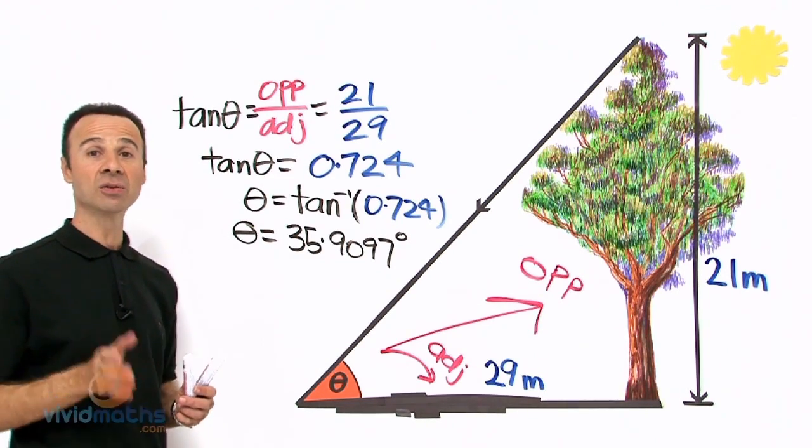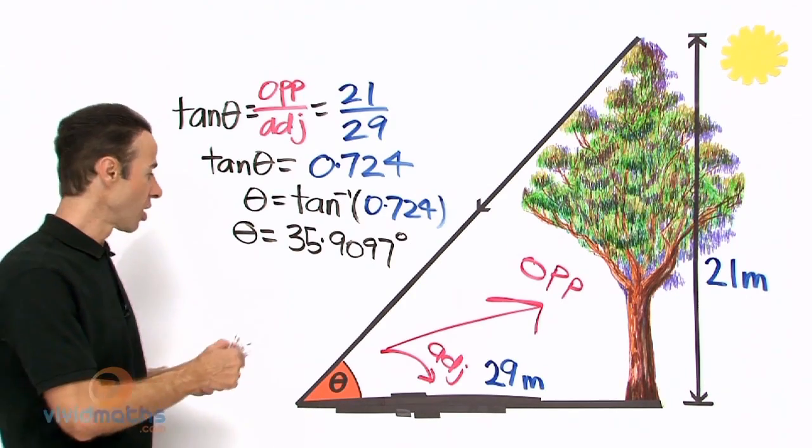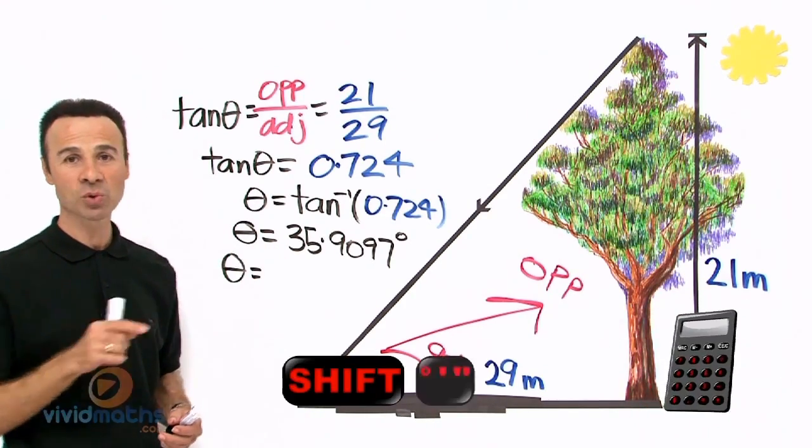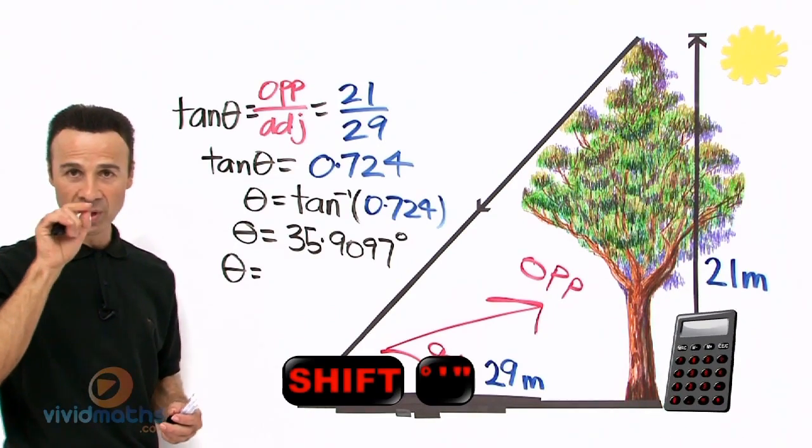Now let us change it into degrees, minutes, seconds. Well, put it in the calculator again and you go shift DMS, or shift those two degrees, minutes, seconds.